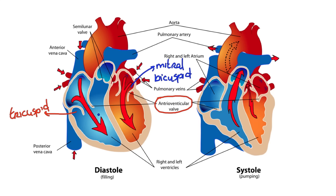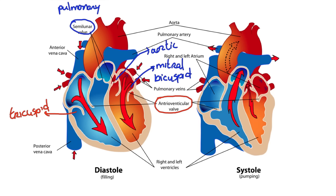So we have the tricuspid or right atrioventricular valve, and the bicuspid or mitral or left atrioventricular valve. Then we have valves that allow blood to leave the ventricles. On the right side, we have the right semilunar valve, which is also called the pulmonary valve — because it leads into the pulmonary artery. On the left, we have the semilunar valve, which we can also call the aortic valve, because it leads into the aorta. So these are the different names: tricuspid, bicuspid, mitral, atrioventricular, aortic, and semilunar — which includes the pulmonary and the aortic.